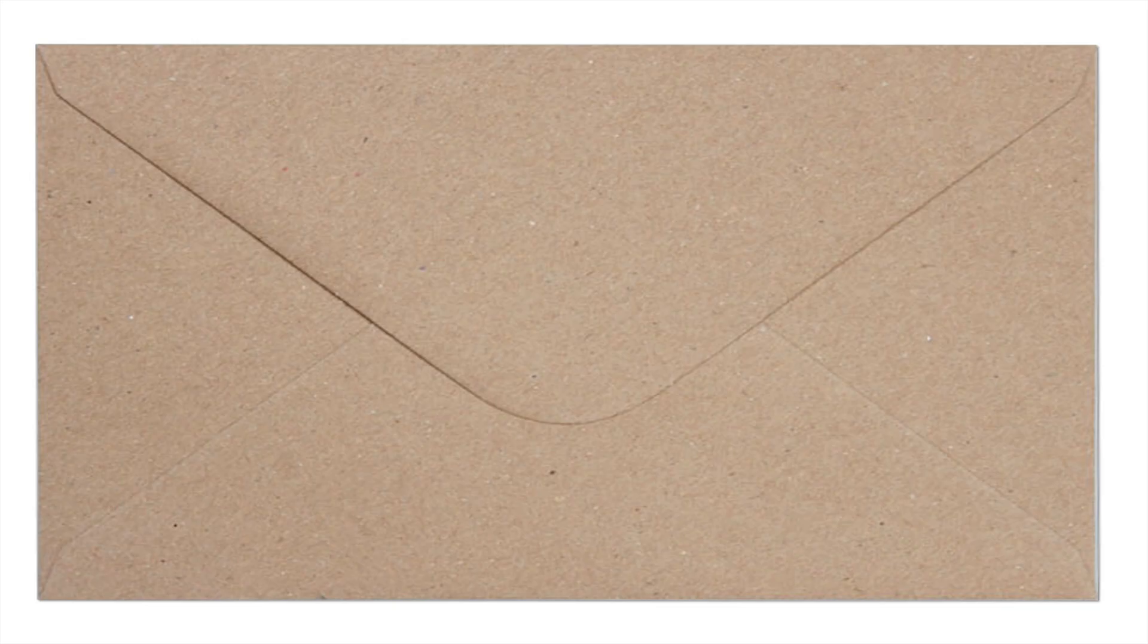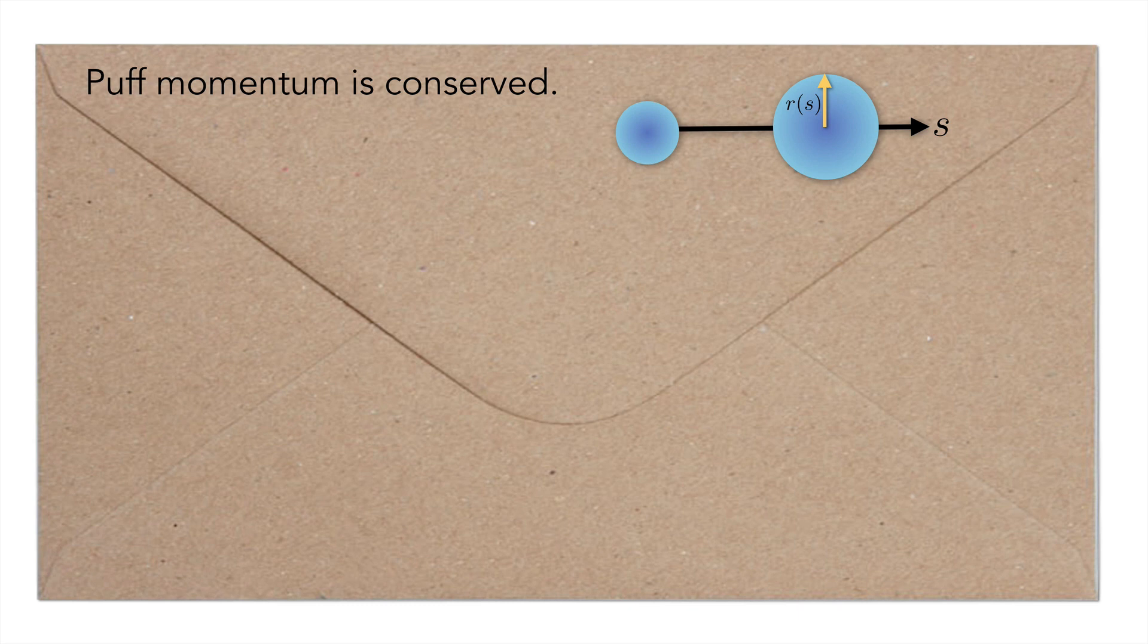Again, let's show how this can be estimated on the back of an envelope. We assume the puff moves along in S in the form of a spherical cloud, and that its radius grows in a manner consistent with the entrainment hypothesis. In this situation, it was established by Richards in '65 that the puff momentum is conserved.